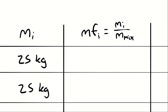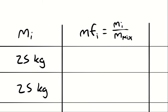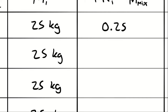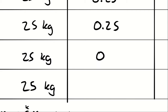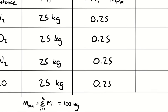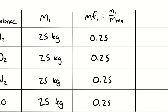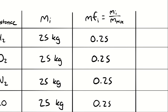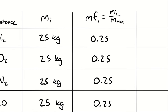The mass fraction for each component is 25 kilograms divided by 100 kilograms, which is 0.25. Each component — oxygen, nitrogen, carbon monoxide, and hydrogen — has a mass fraction of 0.25, because each contributes one quarter of the total mass.